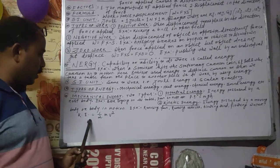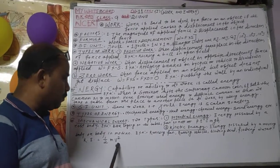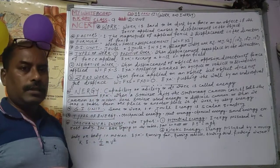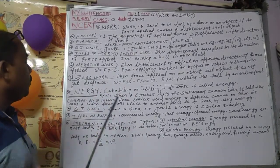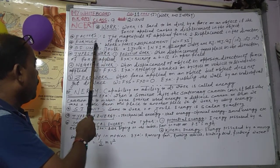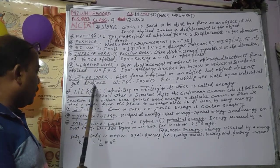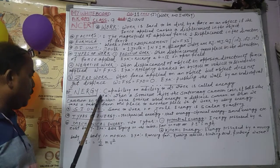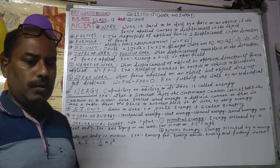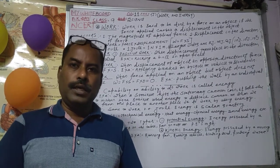The kinetic energy formula is KE equals half mv squared, where m is for mass and v is for velocity or speed of the body. So this is about today's class. We discussed many points: work — its definition, formula, SI unit, and types of work. Then energy — its definition, SI unit, and types of energy. Today's class is over and we will meet again next class. Goodbye, bye-bye.